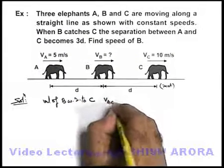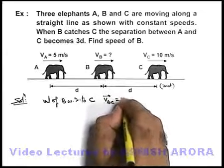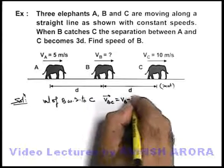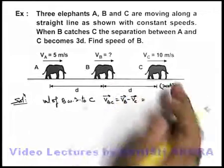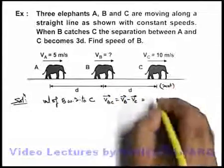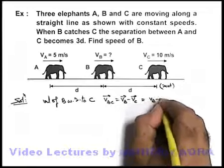The velocity of B with respect to C can be simply written as V_B - V_C. Here we don't need to use any vector because they are moving in only one dimension, so it can be written as V_B - 10.